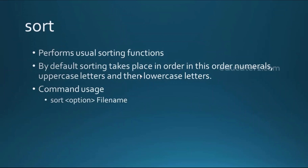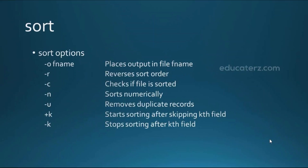Moving forward, the sort command is used for ordering the contents of a file. The basic sort order starts with numeric values, then uppercase letters, then lowercase letters. There are several options for the sort command: 'sort -r' reverses the sort order, 'sort -n' sorts numerically, 'sort -c' checks whether a file is already in sorted order, and 'sort -U' (uppercase) removes duplicate records.